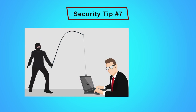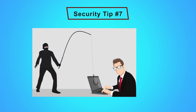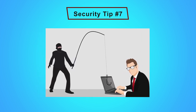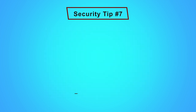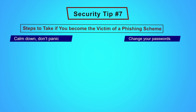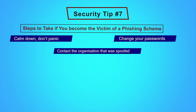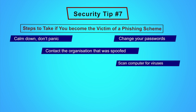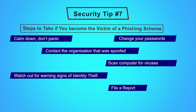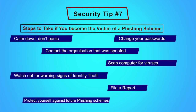What are the steps to take if you are a victim of a phishing scheme? Calm down, don't panic. Change your passwords. Contact the organization that was spoofed — meaning the one the phishing email was masquerading upon. Scan your computer for viruses. Watch out for warning signs of identity theft. File a report with the security organization if you see any damages. Protect yourself against future phishing schemes.